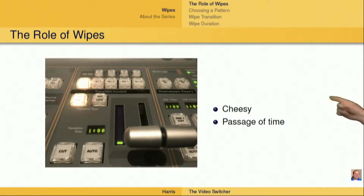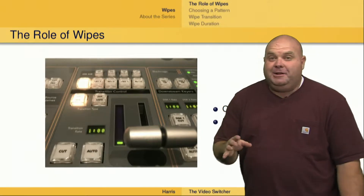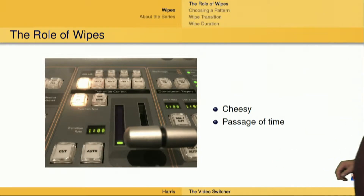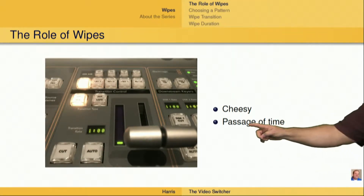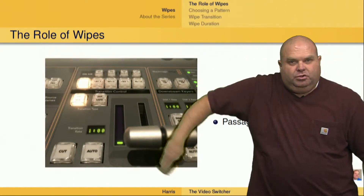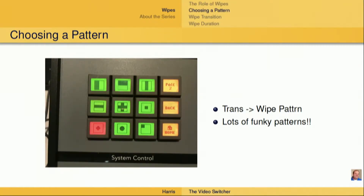Here's the thing about wipes — they are extremely cheesy. I was a child of the 80s, I've been around a long time, and I can tell you in the 1970s and 1980s, wipes were a big part of television production. Not so much anymore, but they do have their place. For example, if you want to show the passage of time, you could do a clock wipe that moves around the screen in the nature of a clock. We also see them in movies, very rarely though. We do use them, so it's important for us to understand how they're used.